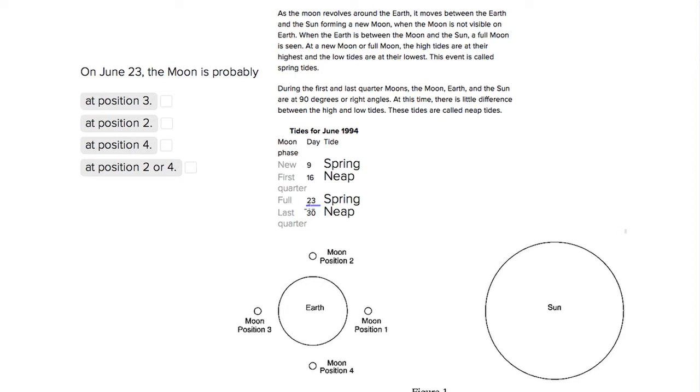So we see day 23, the moon is full. So we can look in our paragraph to determine where a full moon would fall in this position graph.